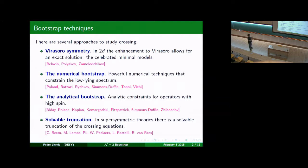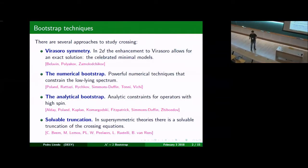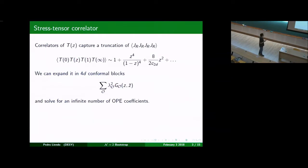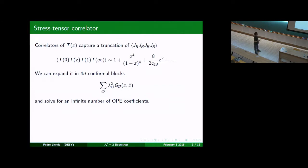All of these techniques are going to play a role in this talk. We're going to try to solve this theory from all possible fronts. Let's start by mimicking a calculation that Maddalena just did. N equals two theories have an R-symmetry current which sits in the same multiplet as the stress tensor. So if you study these correlators of R-symmetry currents in four dimensions, you're also morally studying the stress tensor. That's the power of supersymmetry.